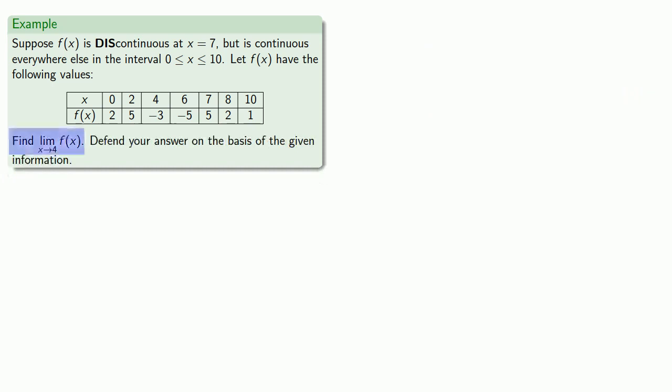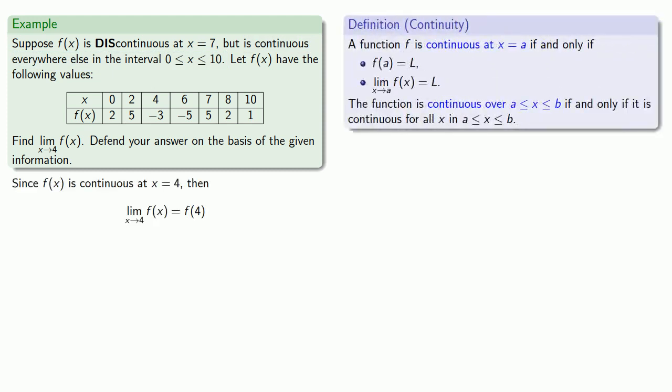What about the limit as x approaches 4 of f of x? So we do know that f of x is continuous at x equals 4. And since we know the definition of continuity, we know that the limit as x approaches 4 of f of x is going to be f of 4.